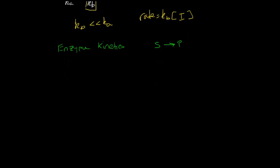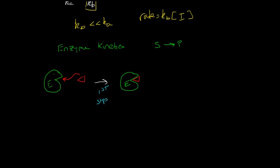Let's think about this conceptually and then put those concepts into a reaction mechanism. First, we have our enzyme. The enzyme needs to bind to the substrate — our substrate is shown here in red. The very first thing that needs to happen is for our enzyme to physically interact with the substrate. The substrate binds into the binding pocket, and we form the enzyme-substrate complex. This is our first step in enzyme kinetics.